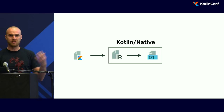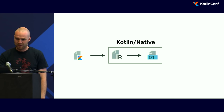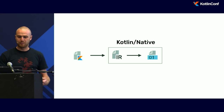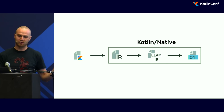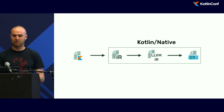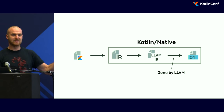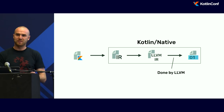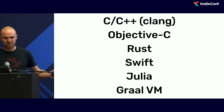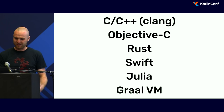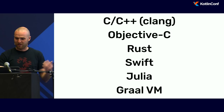LLVM is at the same level as GCC maybe. Not many people know about it, but lots of software is built using it. If you use iOS or MacBooks, probably most binaries are created through LLVM, which is a bunch of tools for creating compilers. In terms of Kotlin, Kotlin Native takes Kotlin intermediate representation, transforms it into LLVM intermediate representation, and then the last step is done by LLVM. So Kotlin Native basically leverages the whole infrastructure of LLVM. LLVM is used by all these languages — it's good company to be in, including hipster languages like Rust.